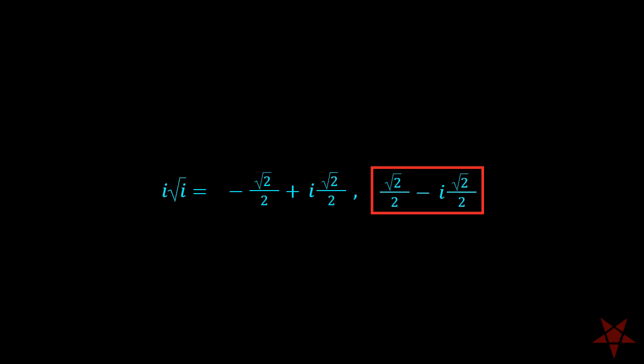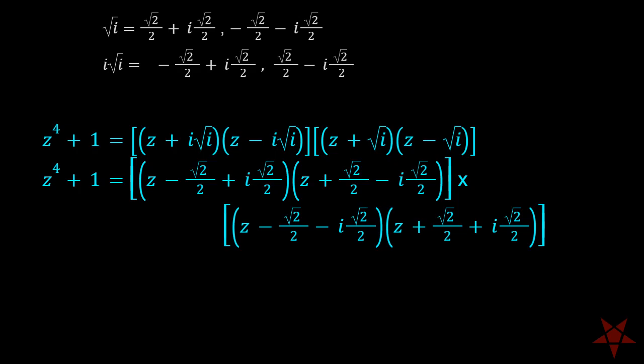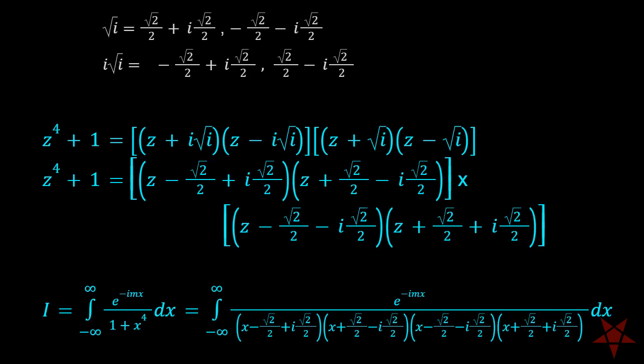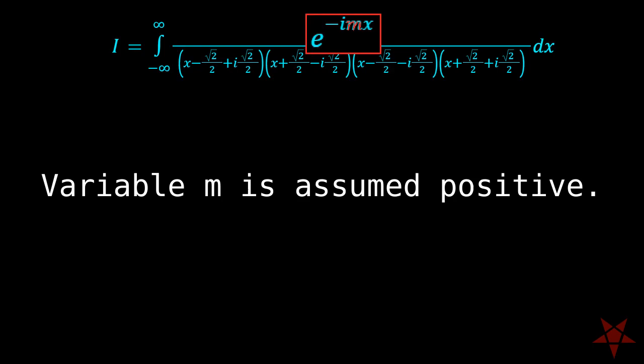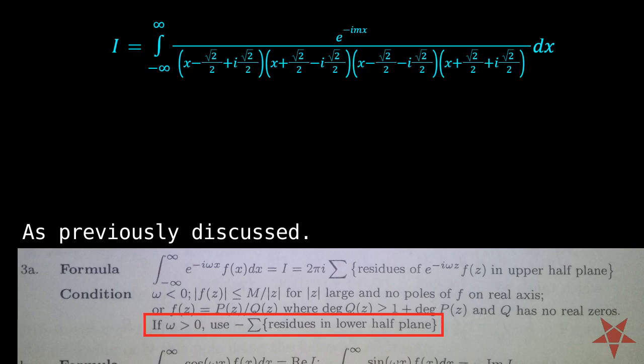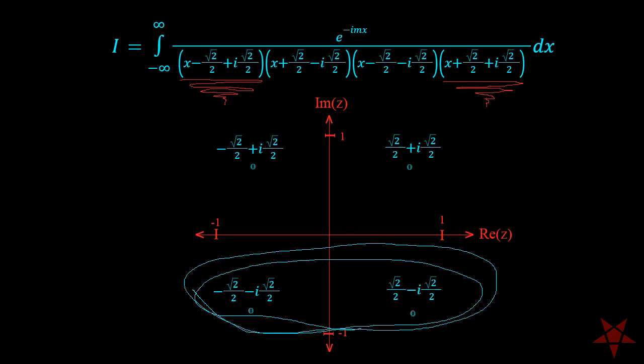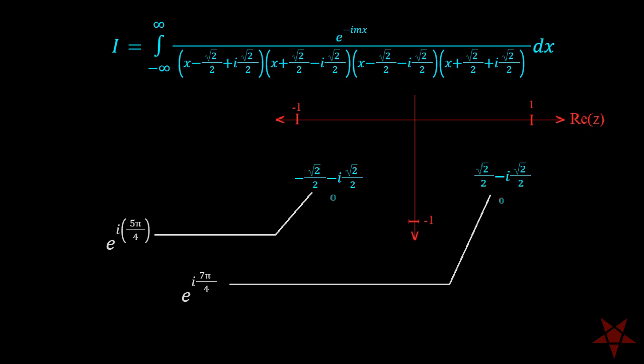Plugging these values into our expression for z to the 4th plus 1 shows that the integrand has 4 separate simple poles in the complex plane. Just a reminder that we will sometimes be using x, and other times z to represent the integrand of the integral, depending upon whether or not the function is being represented in the complex plane. Since we are assuming that the variable m is positive, the book asks that we use the residues in the lower half of the complex plane. Thus, we will be focusing for the moment on the two poles in the lower half of the plane, located at e to the 5i pi over 4 and 7i pi over 4.